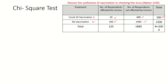Those who are vaccinated total 500 respondents, and those not vaccinated at all total 1500. The total sample size is 2000. So we have 120 affected in total and 1880 not affected, giving us a grand total of 2000.